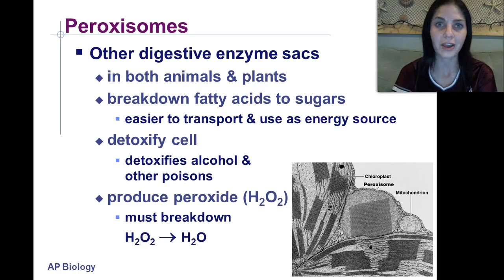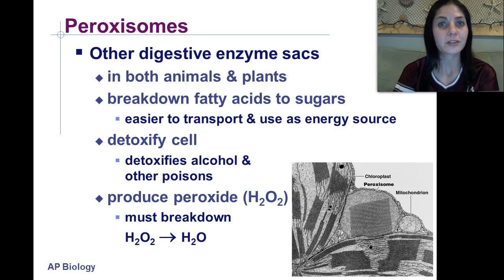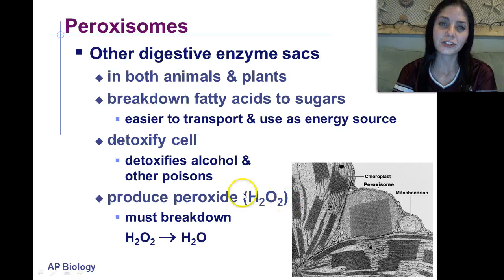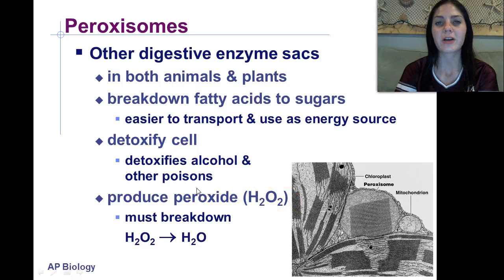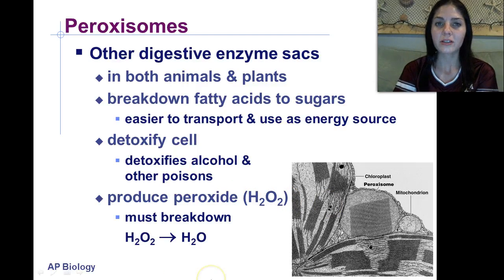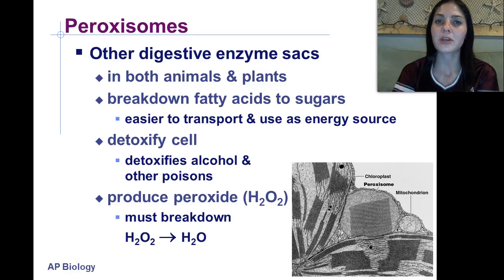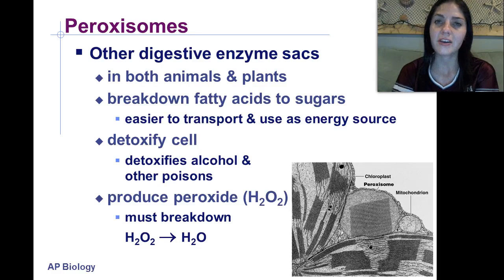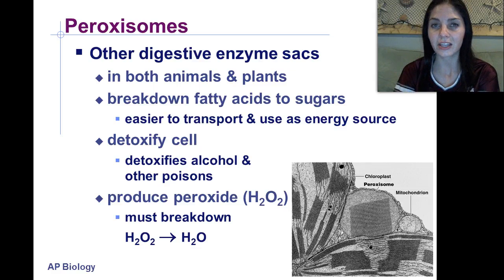As a byproduct, peroxisomes produce hydrogen peroxide, which must be broken down by the cell. Hydrogen peroxide is broken down by several different enzymes, one of them being peroxidase — something you worked with in lab — and another being catalase, which is found in yeast and beef liver.